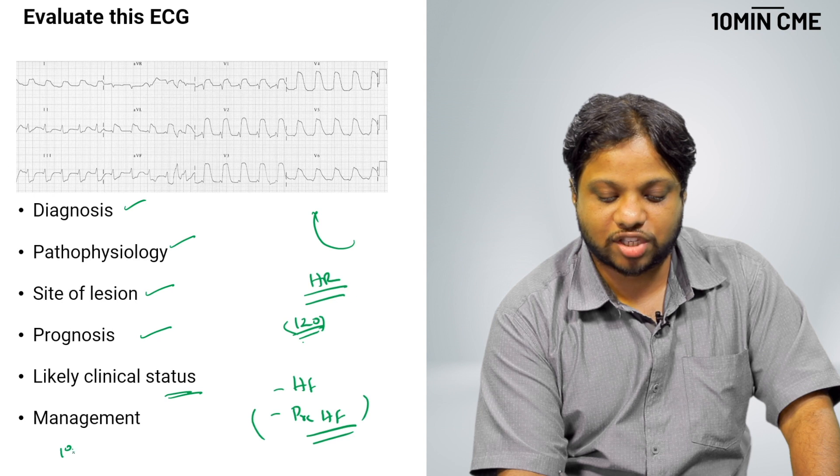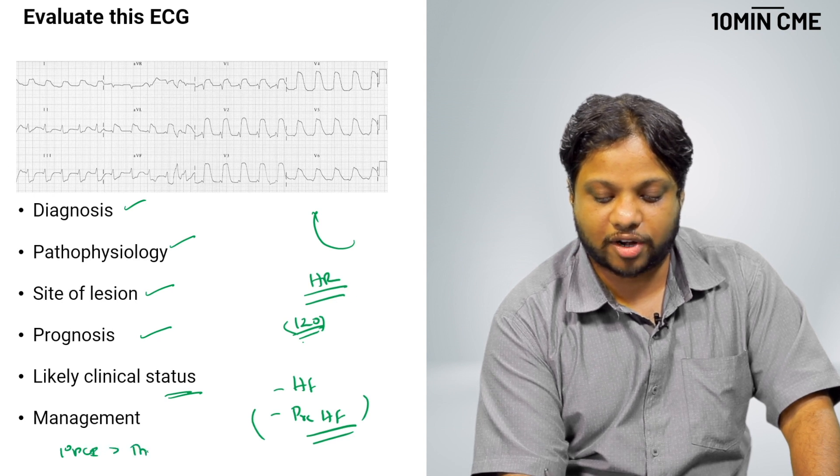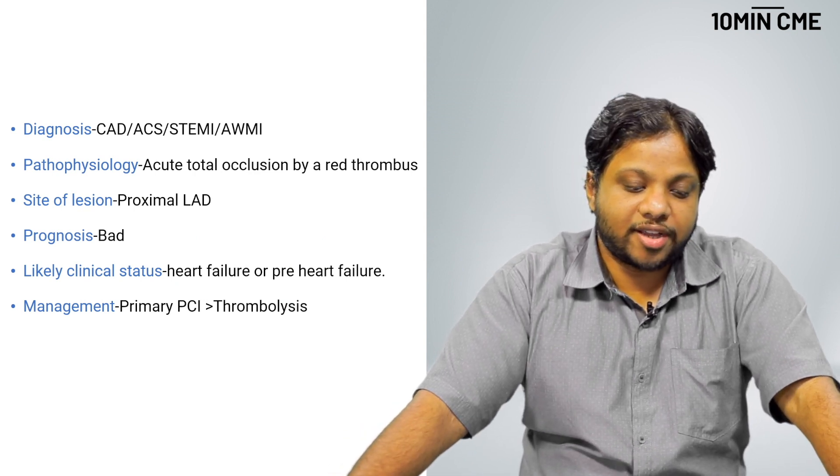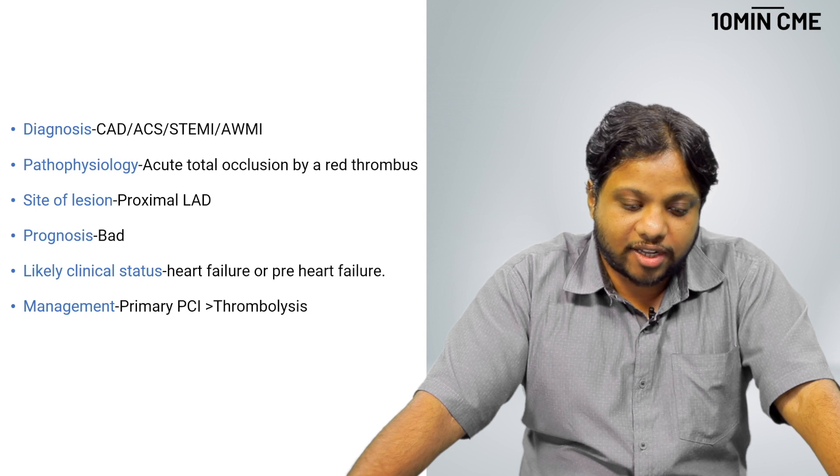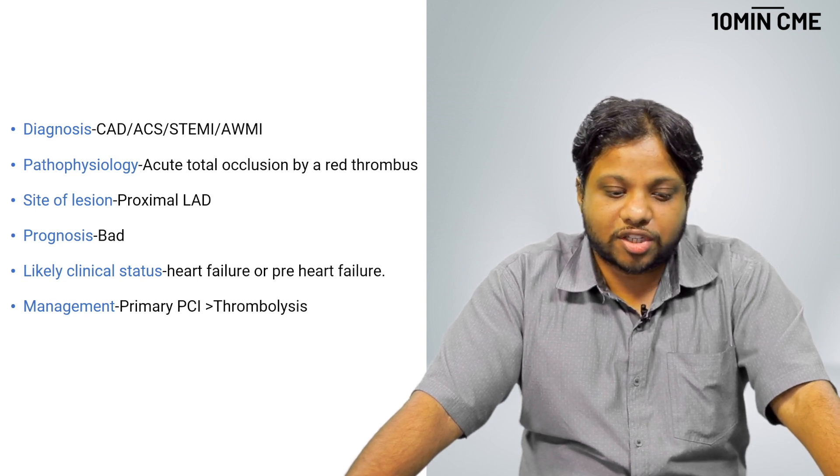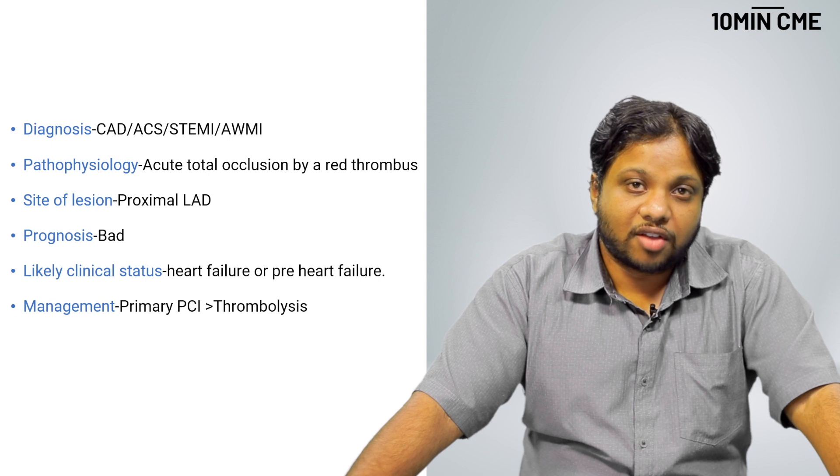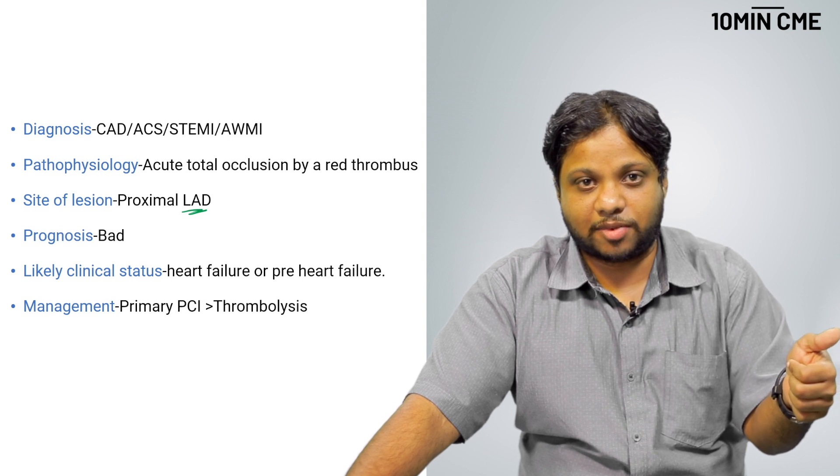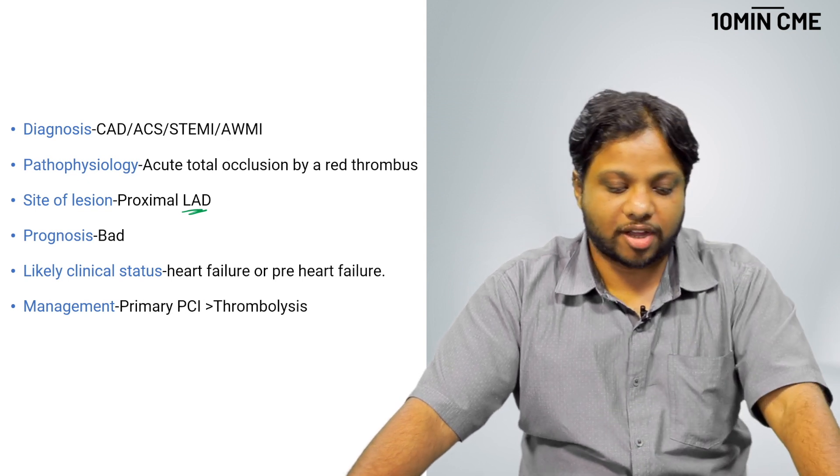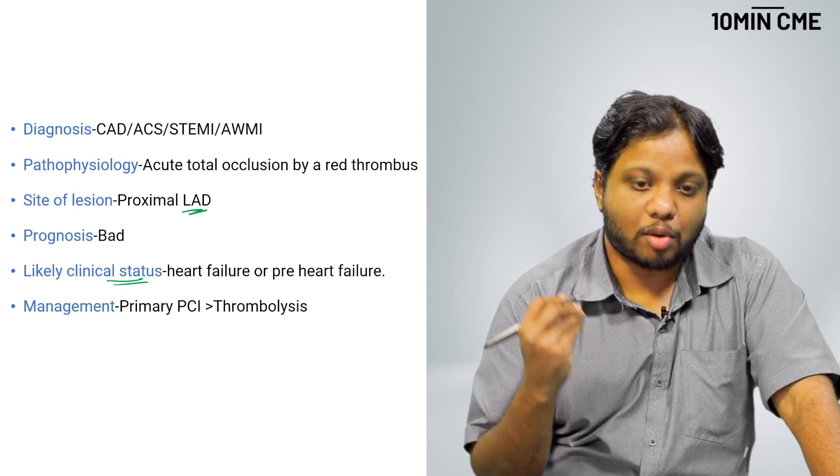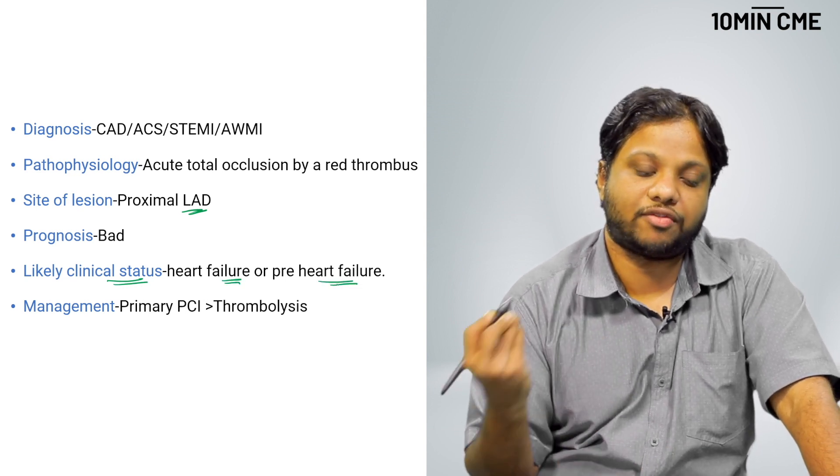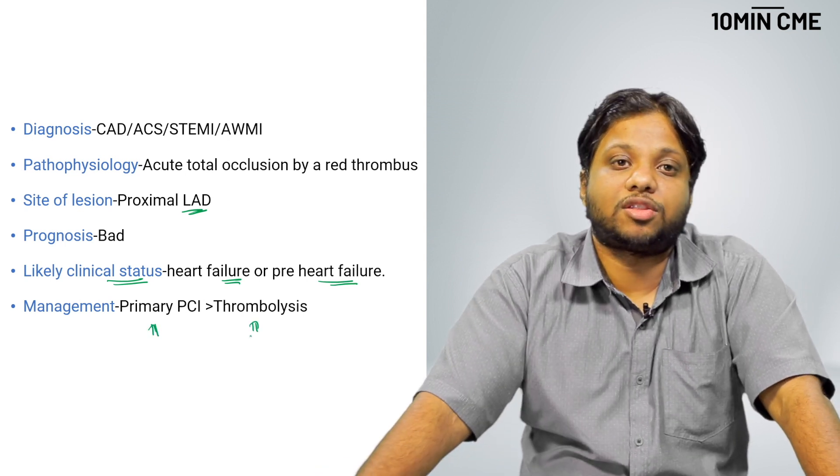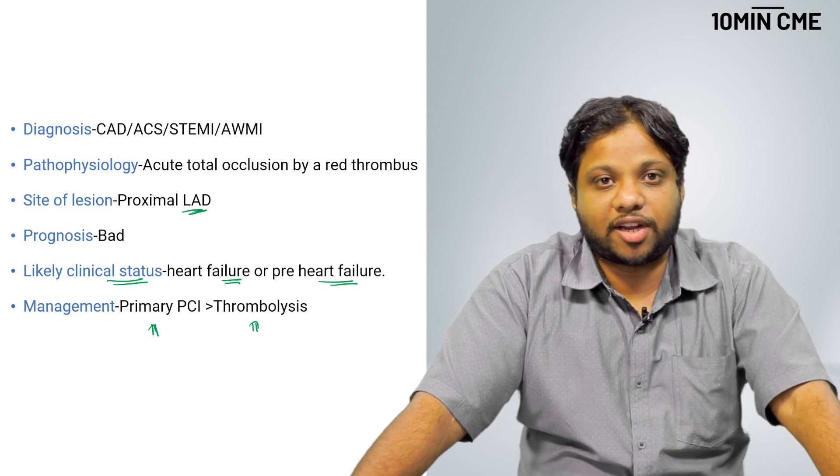Finally management is pretty obvious. Primary PCI is your management of choice which is more than thrombolysis. We have evaluated the ECG in the following headings. The diagnosis CAD, ACS, STEMI, anterior wall MI. The pathophysiology is acute total occlusion by a red thrombus. Where is it occluded? Proximal LAD. What is the prognosis? It is bad because of the site of occlusion in the proximal LAD and the type of injury which is a grade 3 ischemia. Likely clinical status. This patient is probably in heart failure or he is in pre-heart failure. He is going to go in for heart failure. What is the management? It is primary PCI. First option, better than thrombolysis.